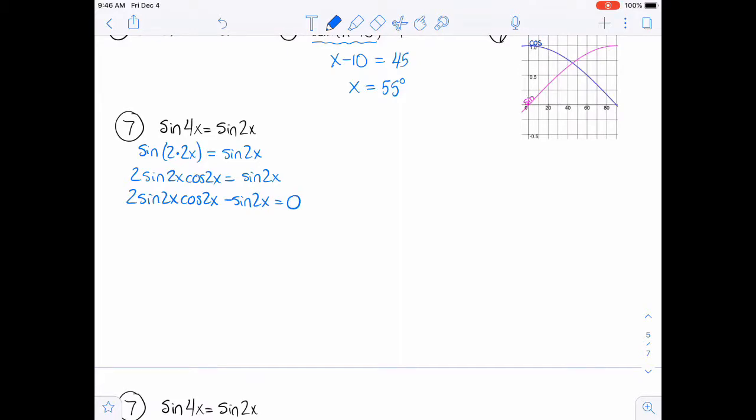And then we're going to subtract that sine 2x so that everything is all on one side. And then you can actually factor out, greatest common factor, the sine of 2x. It's in both of those terms. So I'm going to pull that out. And what I'm left with then is the 2 cosine 2x and a minus 1. So then I'm going to set both of those equal to 0. So the sine of 2x equals 0. And 2 cosine 2x. I'm going to add the 1 and just say equals 1.